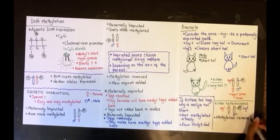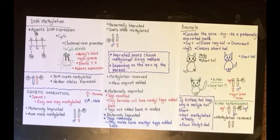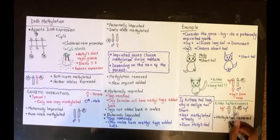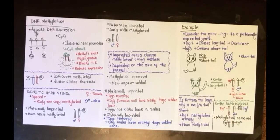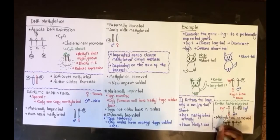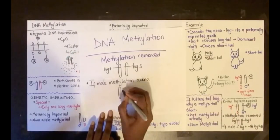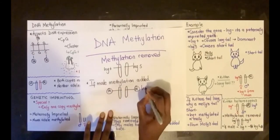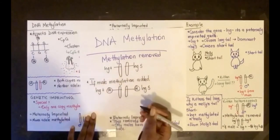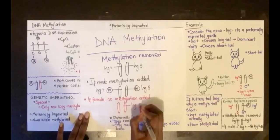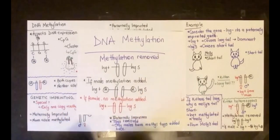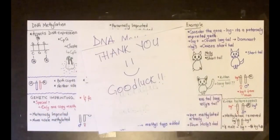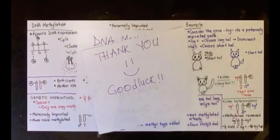During meiosis, the methyl tags will be removed—wiped clean, no tags. So if the kitten was male, the methyl tags will be added again to the two alleles since it's paternally imprinted. As we spoke about earlier, when the tags are removed in a paternally imprinted gene, the tags are added back in the males. But if it's a female, no tags will be added. Thank you guys for watching this video, and good luck on your exams.